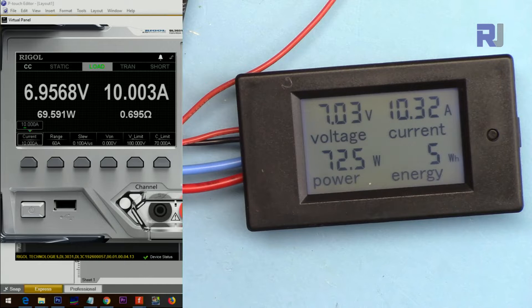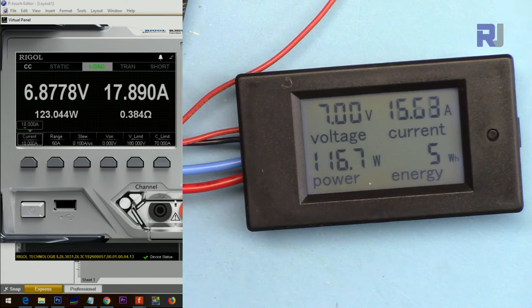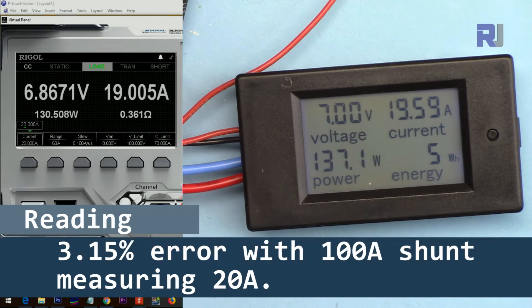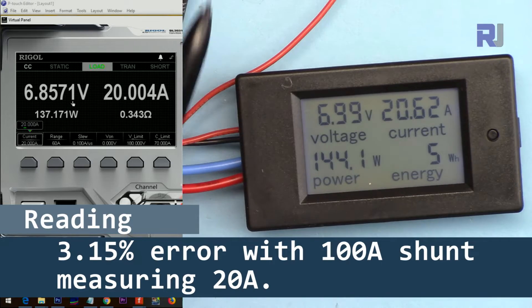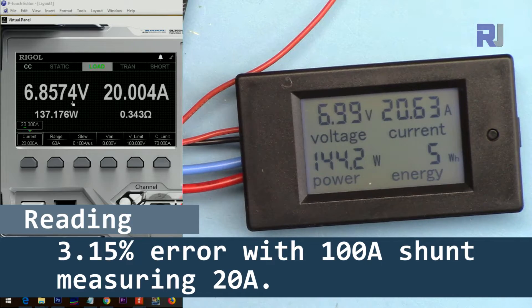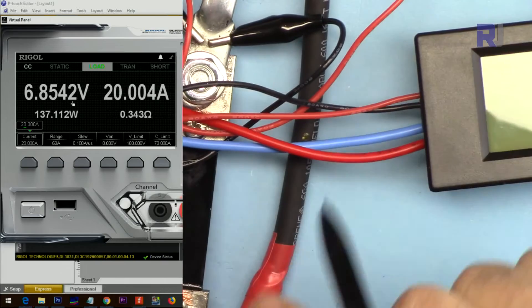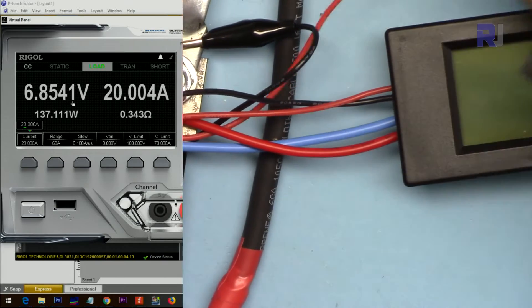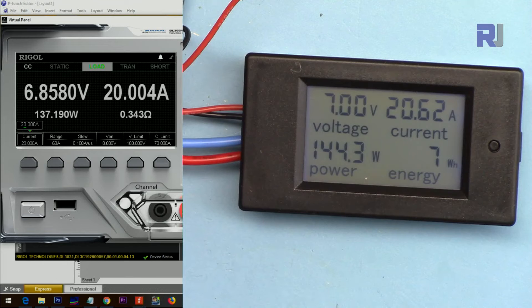This can handle up to hundred ampere. Let me just increase the current. Let me go for 20. Now 20 ampere is being drawn by the load and here is this shunt. Let me go for higher current, let's make it 40.